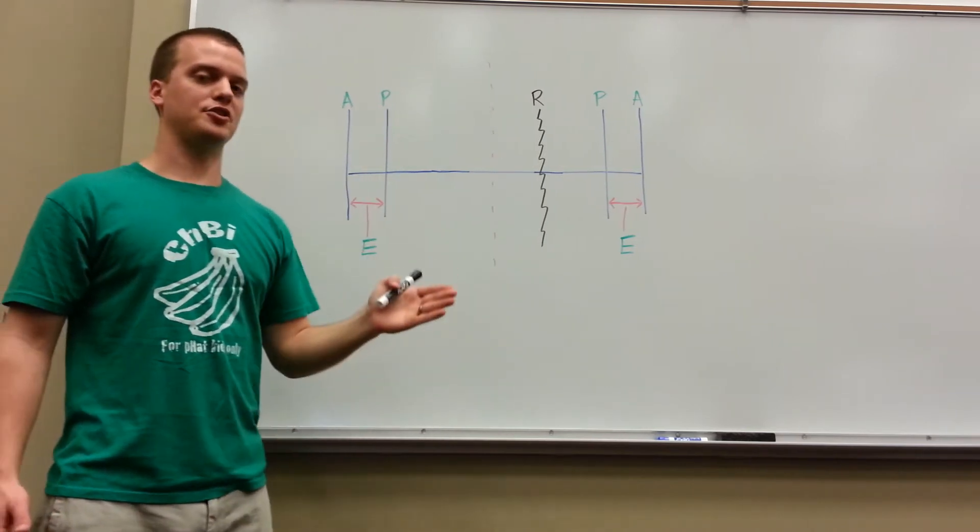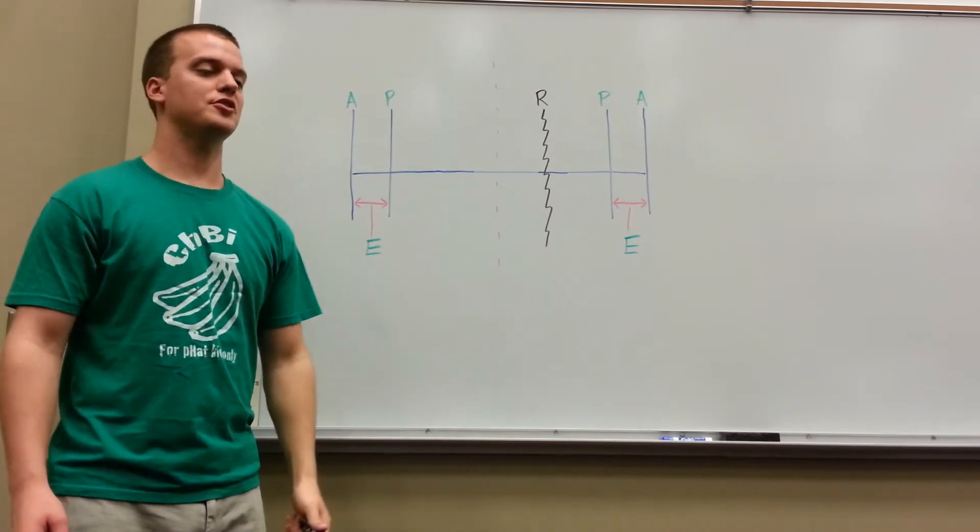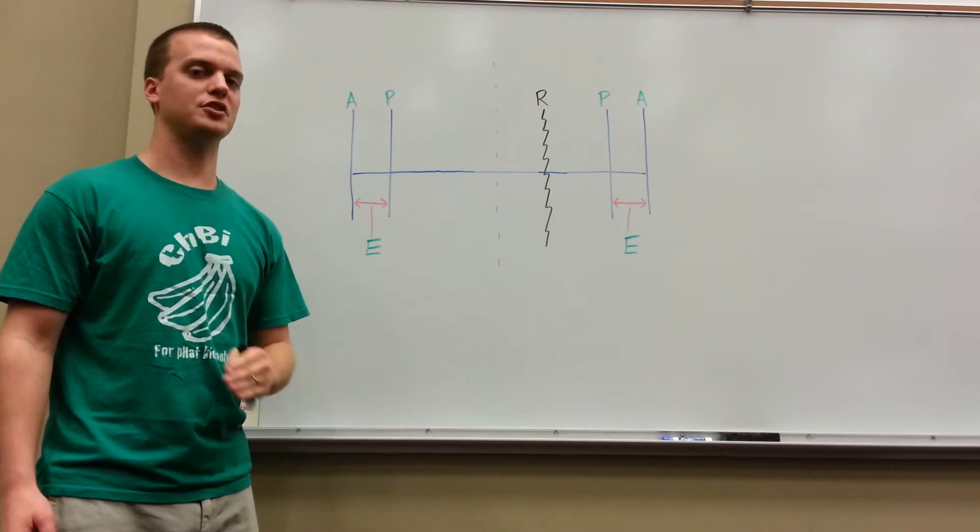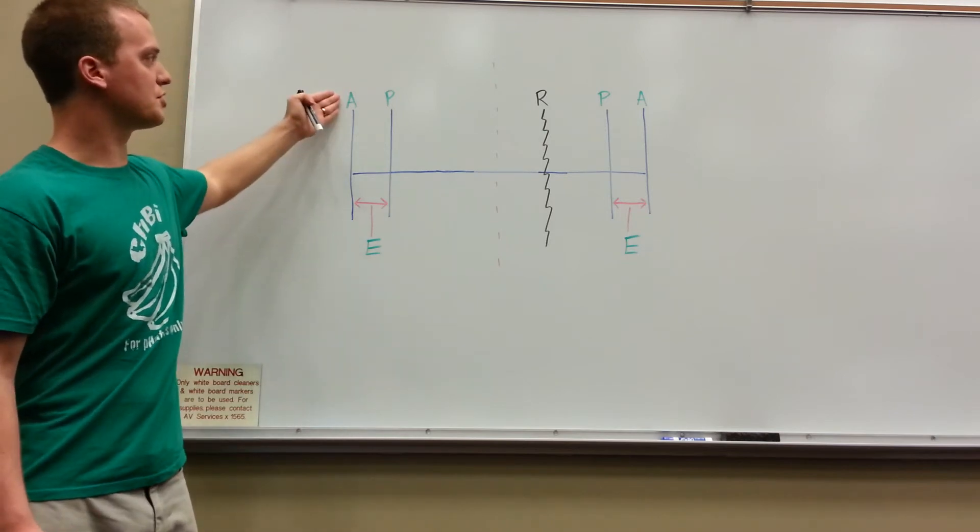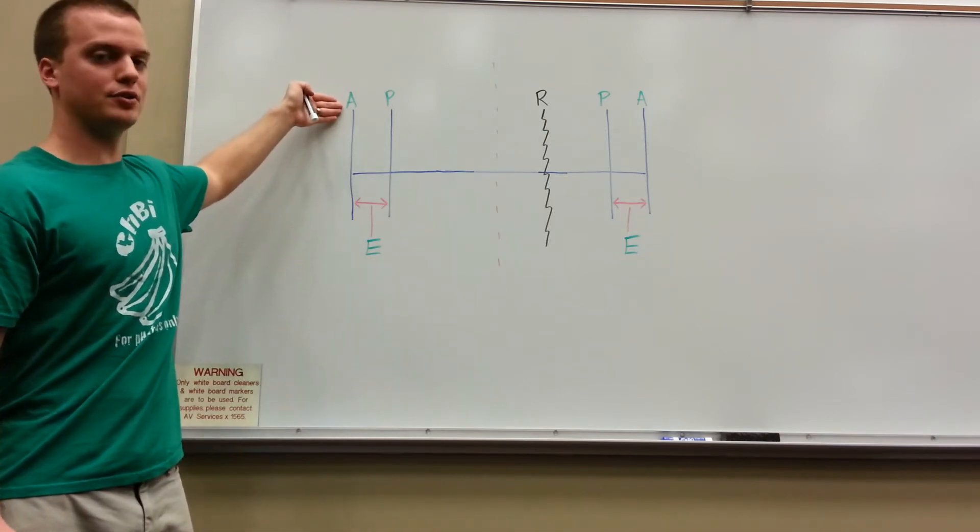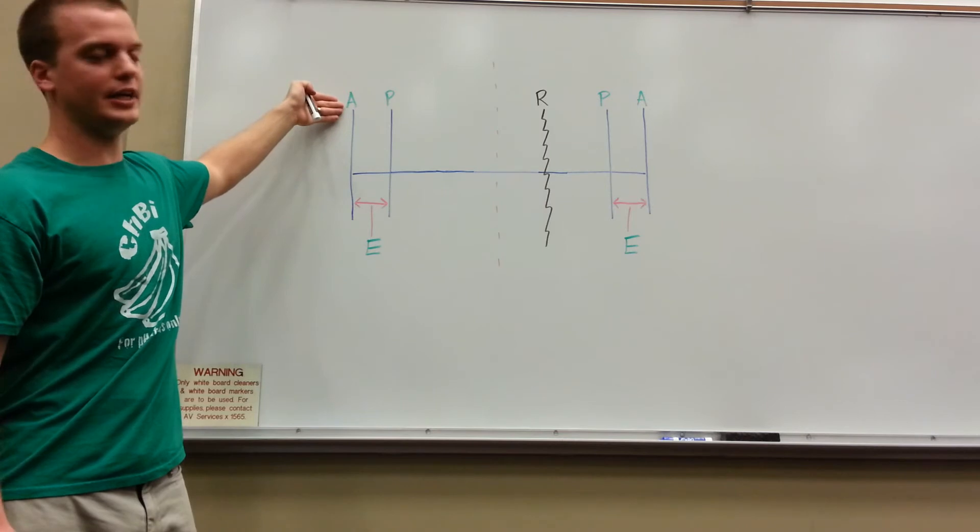If you help the patient in what's called passive motion, so the patient is simply relaxing while the physician is carrying out all of the motion associated with this joint, you can reach what's called the anatomical barrier, which is demonstrated here by A.